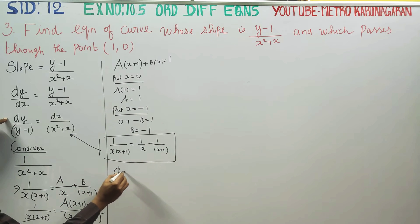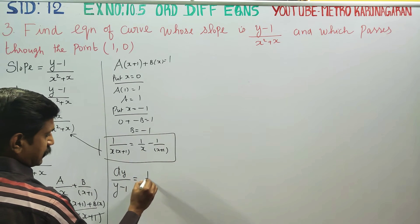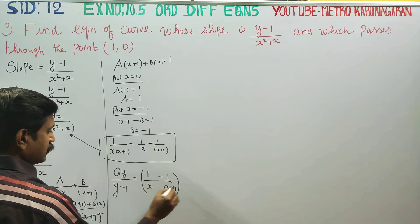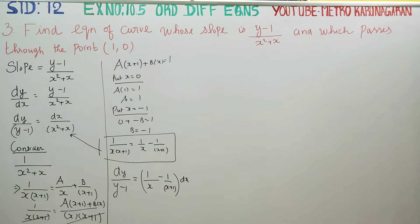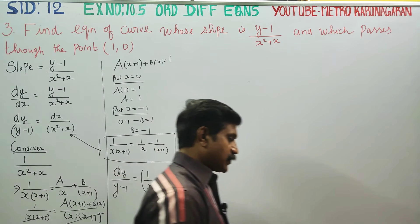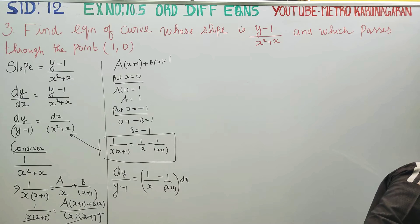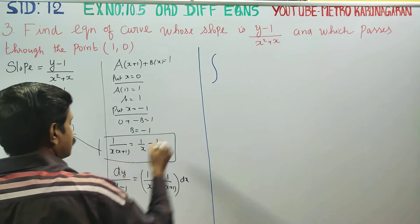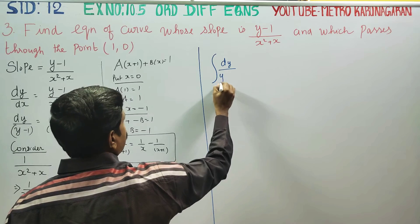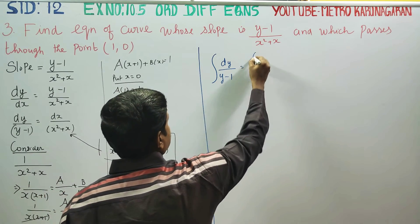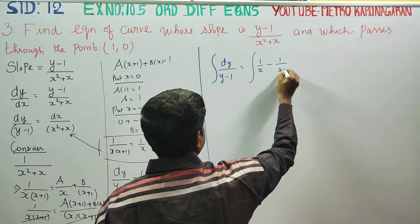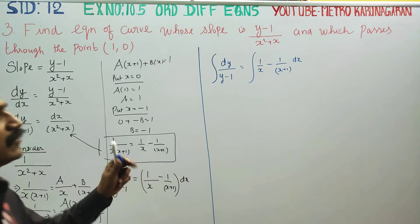In the sum, dy/(y-1) is equal to [1/x minus 1/(x+1)] dx. Integrating on both sides: integration of dy/(y-1) is equal to integration of [1/x minus 1/(x+1)] dx.